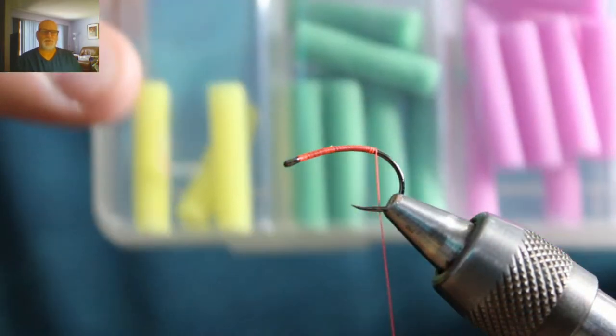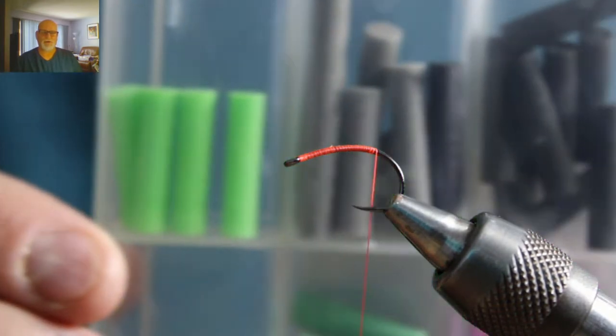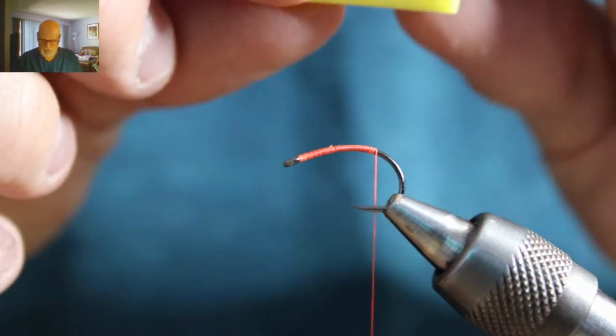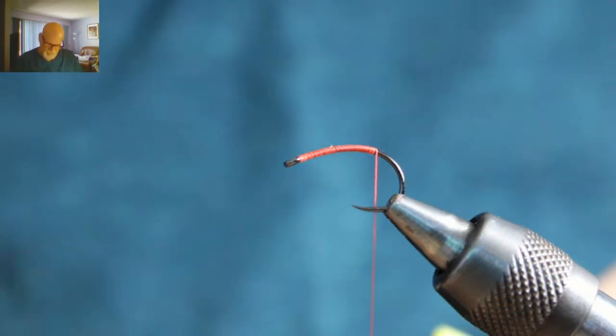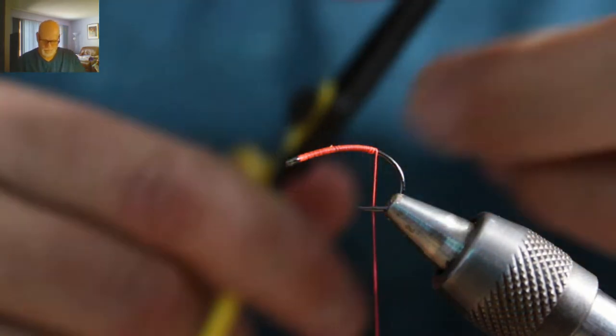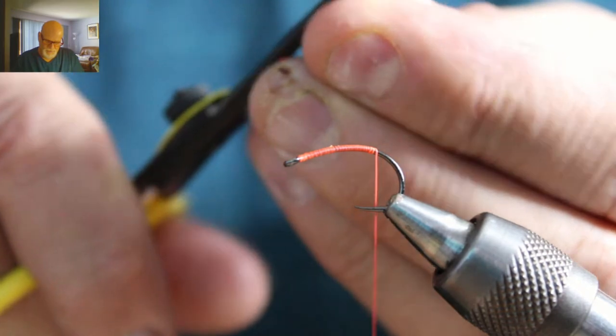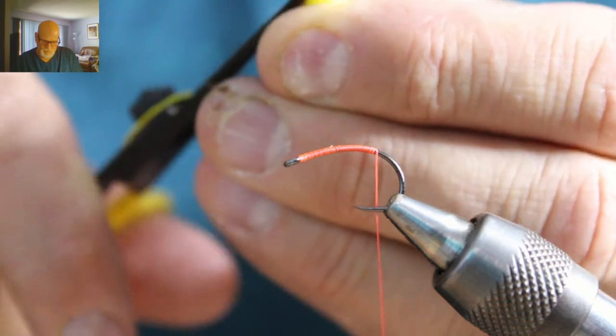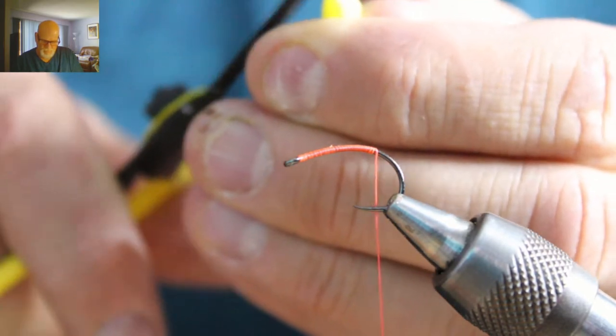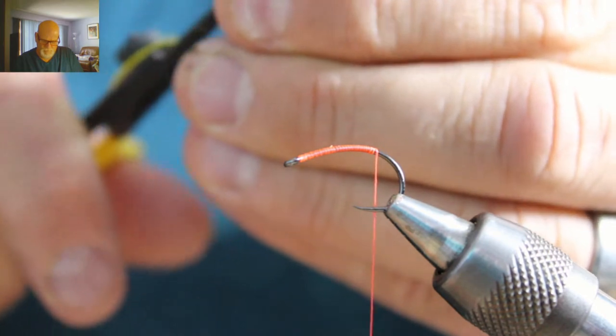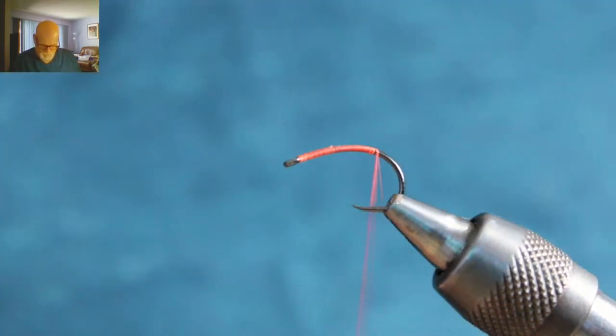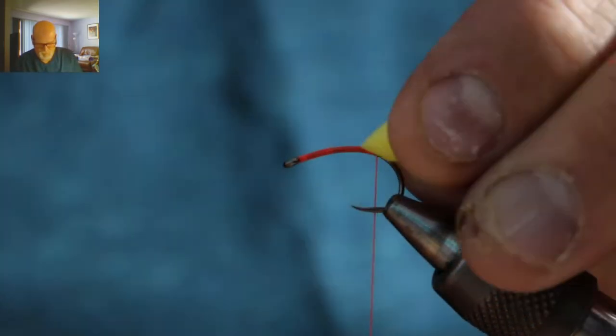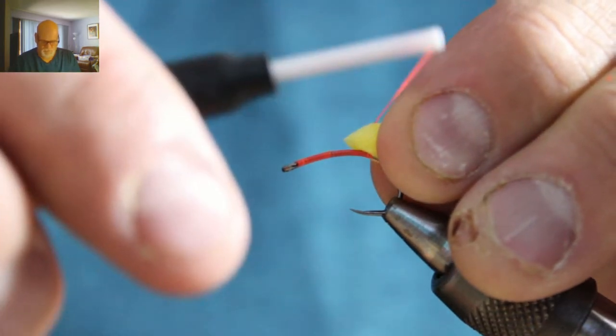There's a selection of colors you can get. Today I'm just going to be using yellow. Obviously that's way too big, I don't need it that big, so I'm going to cut it roughly in half. What I like doing is just sharpening the one point for a tie-in, so I just nip it down into a taper just for a tie-in point.